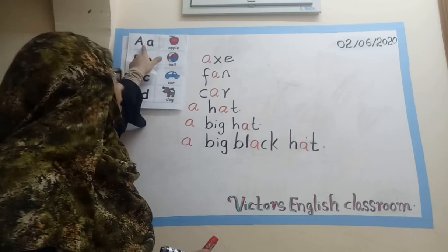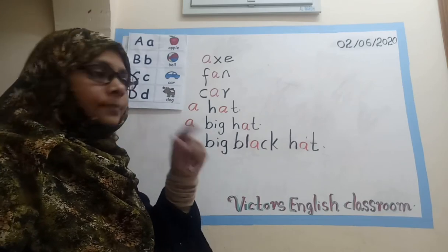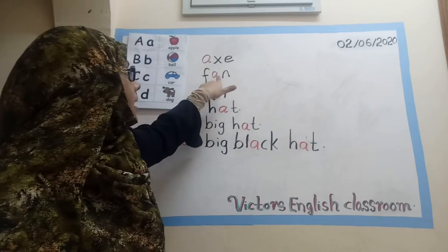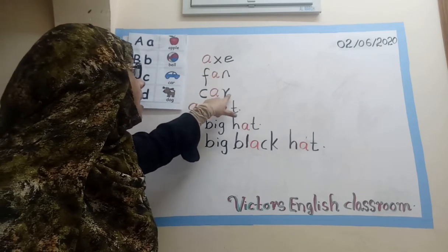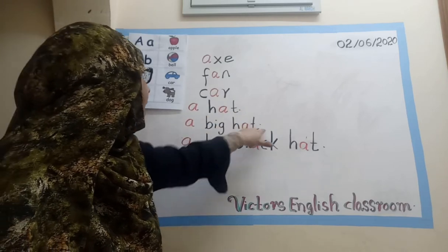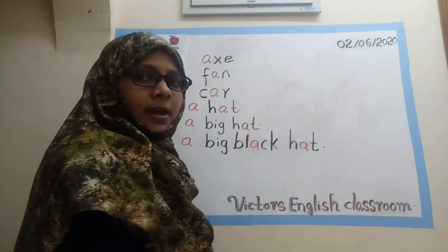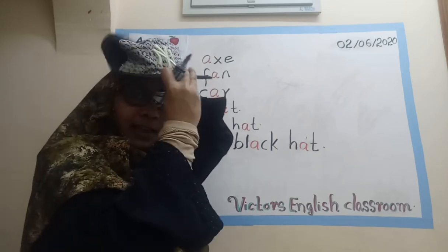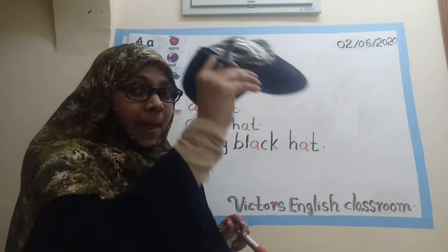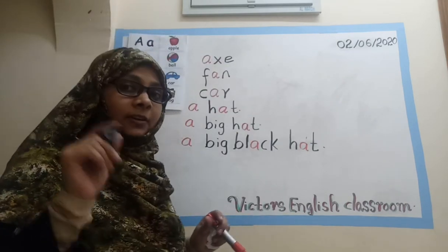Then come to our song. Which letter is this? This is letter A. Which sound does it have? A — ax, as, pan. A car, a hat, a big hat, a big black hat. A hat, a big black hat, a big black hat. Okay, I think you got the correct sound.